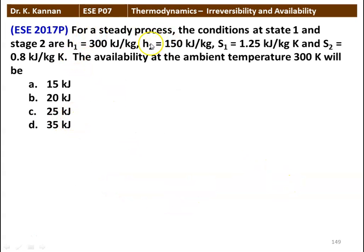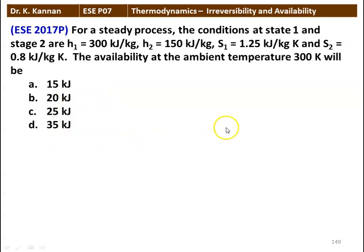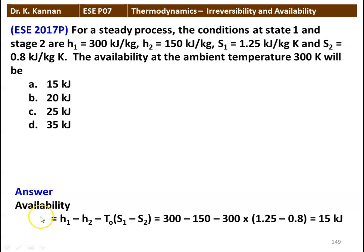Next question: for a steady flow process, the conditions are H1 equals 300 kilojoules per kilogram, H2 equals 150 kilojoules per kilogram, S1 equals 1.25 kilojoules per kilogram Kelvin, and S2 equals 0.8 kilojoules per kilogram Kelvin. The availability at ambient temperature 300 Kelvin is — options: 15, 20, 25, and 35 kilojoules. Availability equals H1 minus H2 minus T0 times (S1 minus S2): 300 minus 150 minus 300 times (1.25 minus 0.8) equals 15 kilojoules.